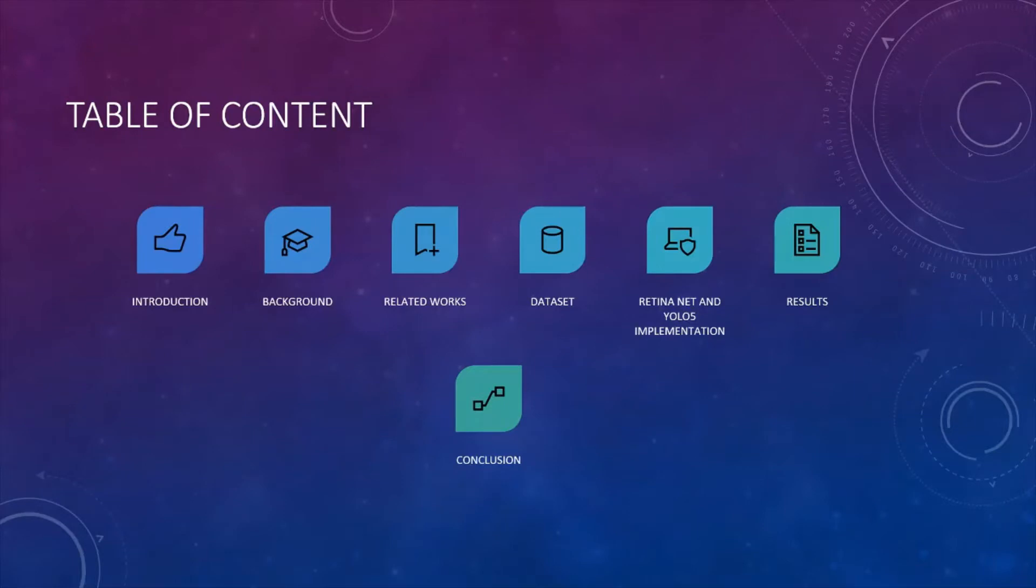Table of contents. Today I will start with the introduction, the motivation for conducting this research and my research questions. Next is the background section. Here I will talk about the overall process of object detection based on traditional methods and deep learning methods. Next is the related work section. Here I will assess the performance of different research papers that have done some work in the area of zebra crossing recognition.